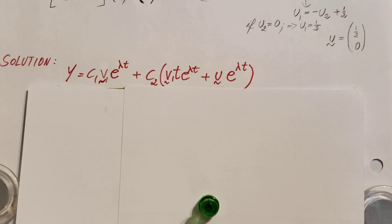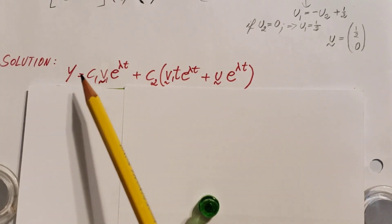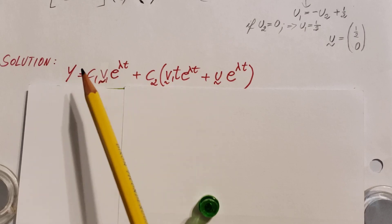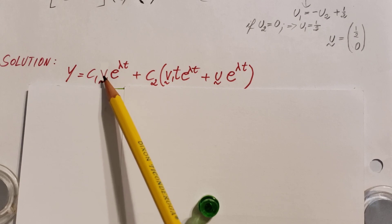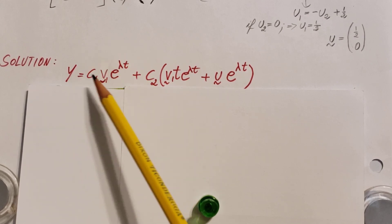Now all that we have left is to write up our solution. Our c1 and c2, they are constants, and for the first eigenvector, here it is: c1 times the first eigenvector times e to lambda t. This is for the first guy.